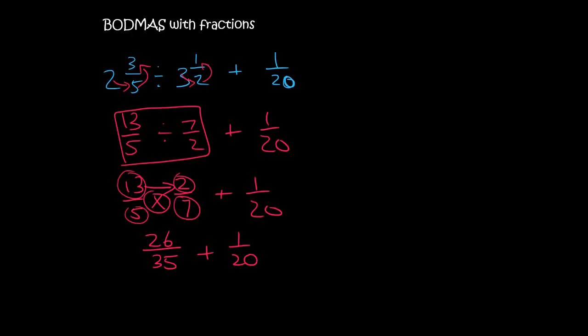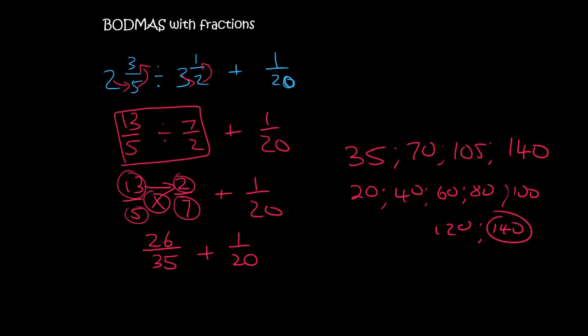Now we are adding. So we need the same denominator. So now what number can 20 and 35 become? Or what we can do is count in 35. 35, 70, 105, 140. And then we can count in 20s. 20, 40, 60, 80, 100, 120, 140. There we go. So they can both become 140.